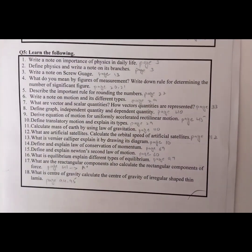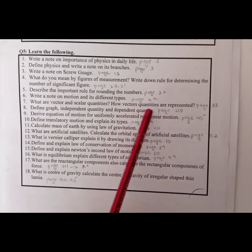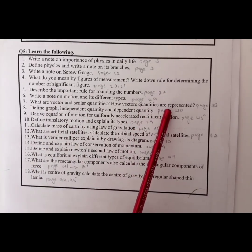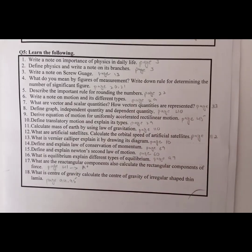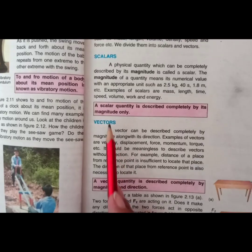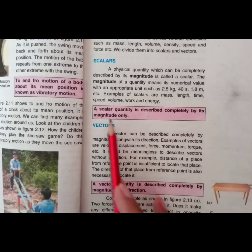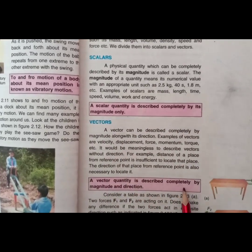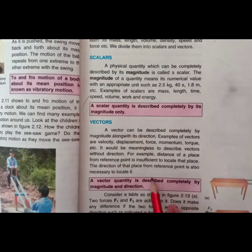Now we will move to question number 7: what are vectors and scalar quantities? How are vector quantities represented? Open up page number 33. A scalar quantity is described completely by its magnitude only, and a vector quantity is described completely by its magnitude and direction.